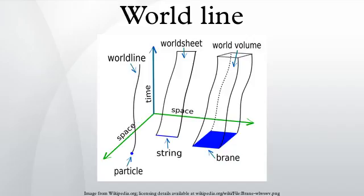The world sheet of an open string is a strip. That of a closed string is a volume. Once the object is not approximated as a mere point but has extended volume, it traces out not a world line but rather a world tube.